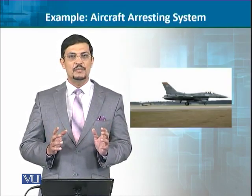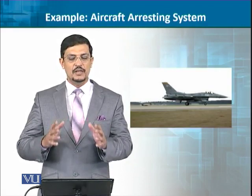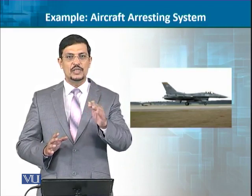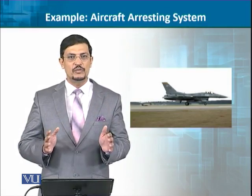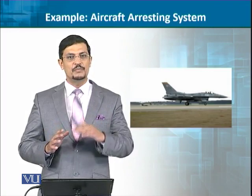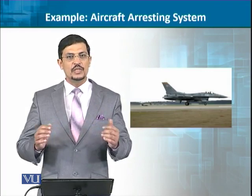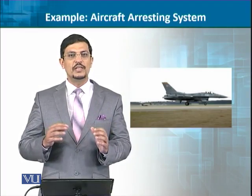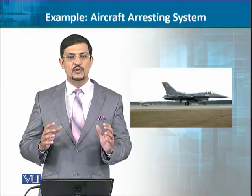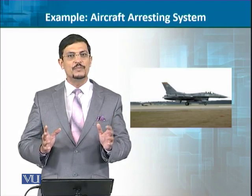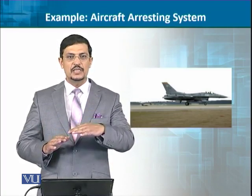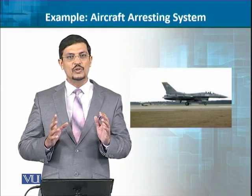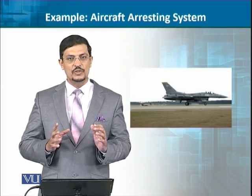Another example of a system is an aircraft arresting system. Sometimes when a vehicle is landing, the length of the runway is not enough for the vehicle to brake normally. In that case there is an arresting system — as you can see here — which immediately controls the speed. This is very common in aircraft carriers. When a vehicle lands, it is necessary to arrest the vehicle quickly and slow it down.